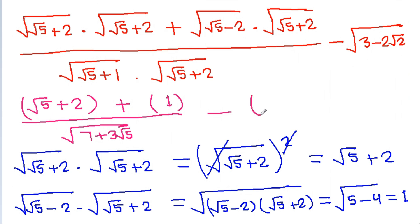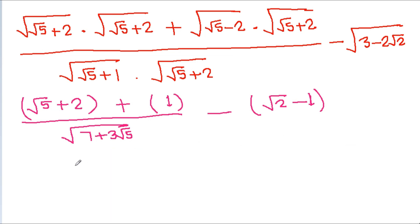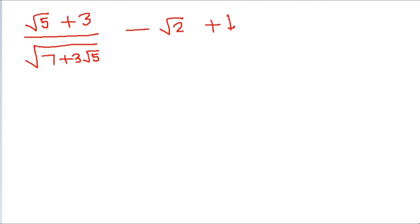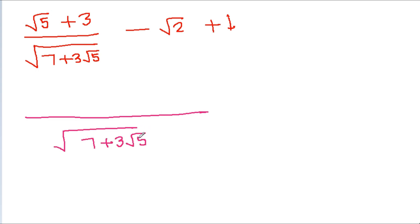This is equal to root 2 minus 1, and it is root 5 plus 2 plus 1 giving 3, over a square root of (7 plus 3 root 5) minus (root 2 plus 1). The square root of (7 plus 3 root 5) will be 4 plus 2 plus 3, or no, x equals 3.